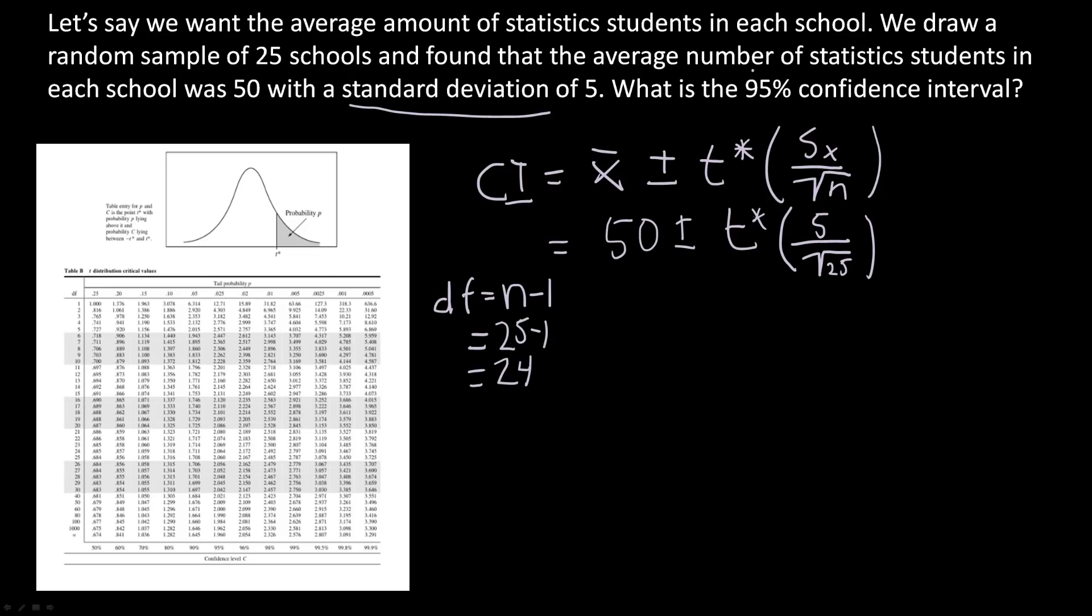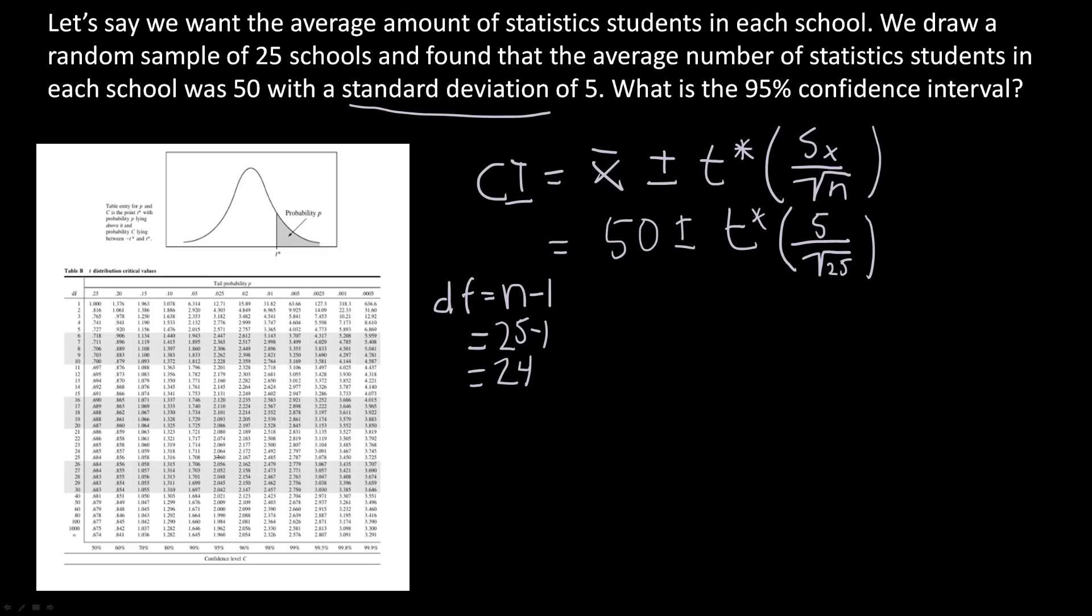And now we have to find the 95% confidence interval. So let's line up the 95% confidence interval with the 24 degrees of freedom. So over here, we see that the 24 degrees of freedom and the 95% confidence interval would be at the value of 2.064. So for this value, it'd be equal to 50 plus or minus 2.064 times 5 over the square root of 25.